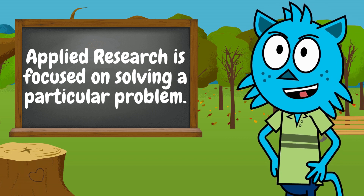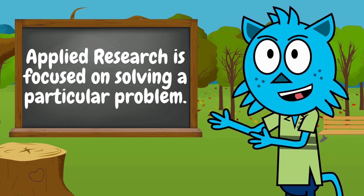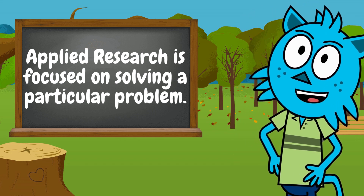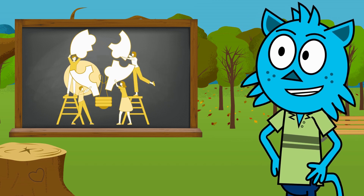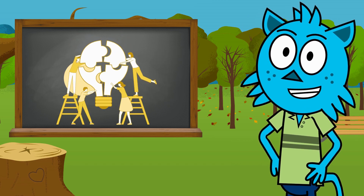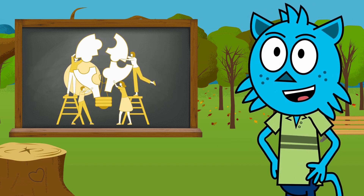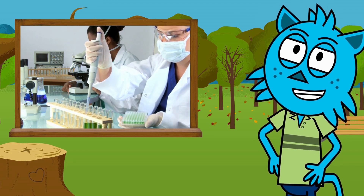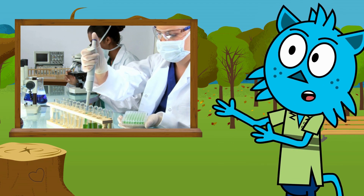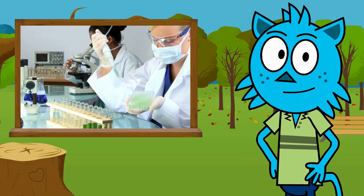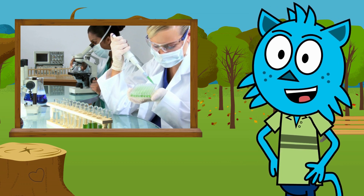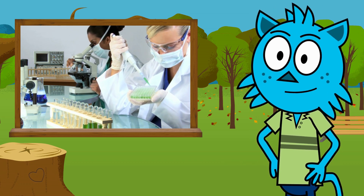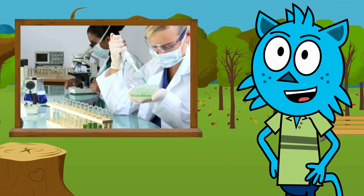On the other hand, applied research is focused on solving a practical problem or answering a specific question. It is aimed at developing practical solutions to real-world problems. Applied research is often conducted in collaboration with industries, governments, or other organizations to develop new products, improve existing technologies, or solve practical problems.